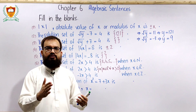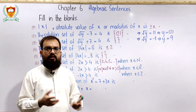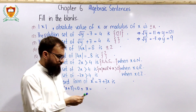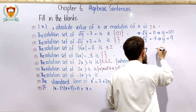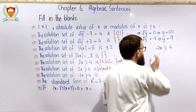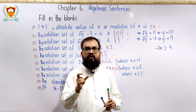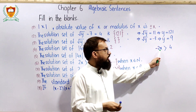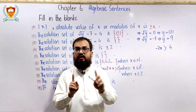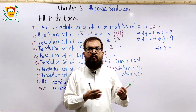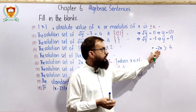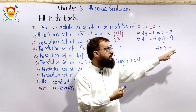اگلا: −2x > −4، integers کے لیے۔ یہاں ایک important point ہے — variable والی term ہمیشہ positive ہونی چاہیے۔ Constant کا sign negative یا positive کچھ بھی ہو سکتا ہے، لیکن variable والی term negative ہو تو اسے minus 1 سے multiply کرتے ہیں۔